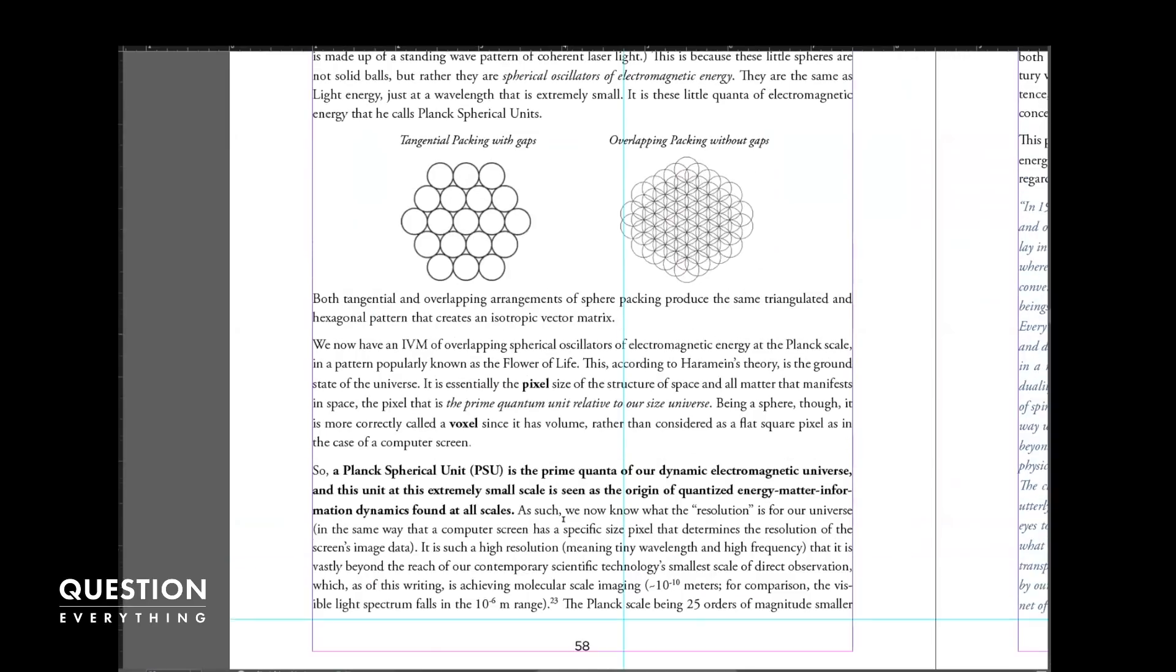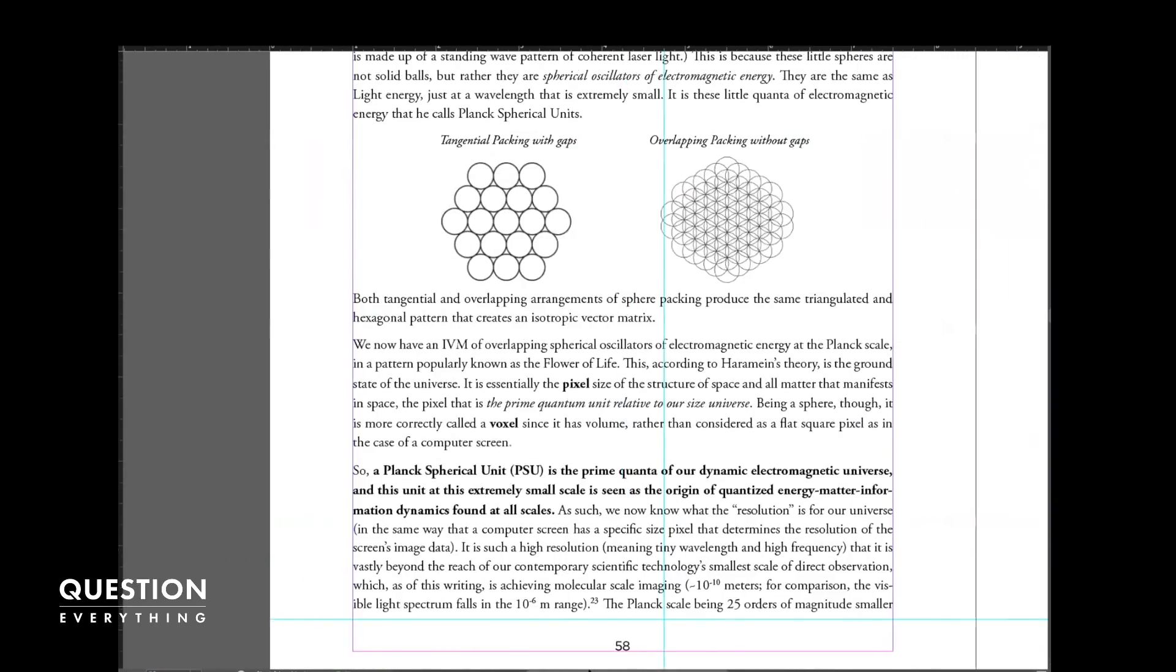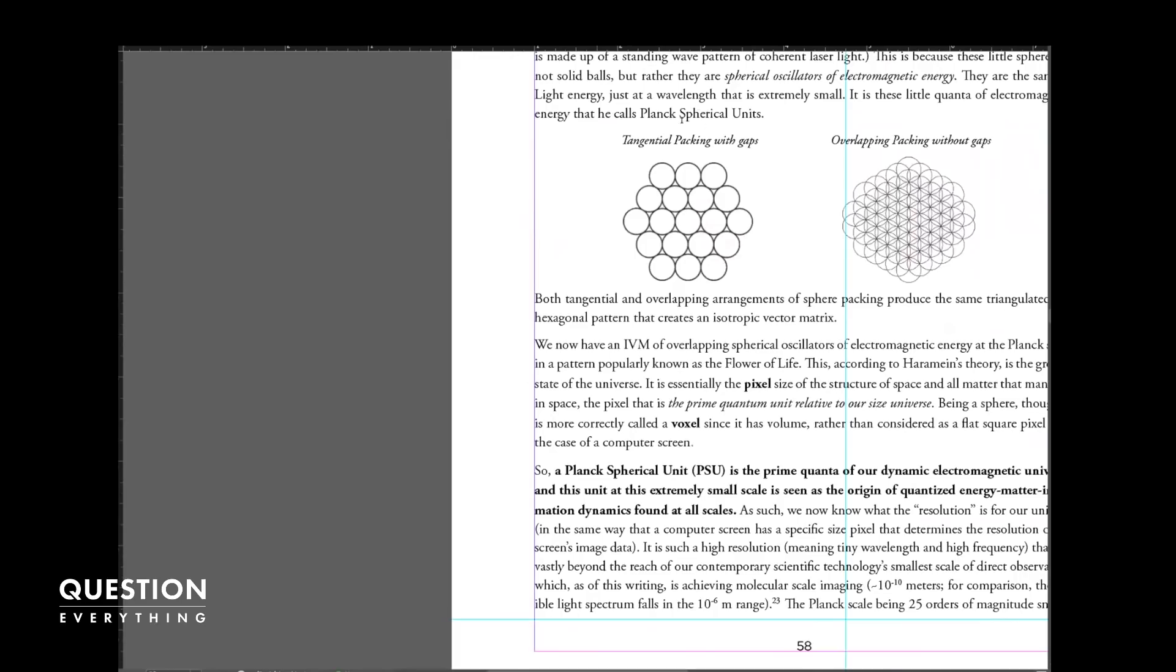You have the relationship between the tangential packing that Buckminster Fuller worked with. What Nassim has done is take that same geometric arrangement, and then he wanted to have an all face, all space filling geometry where there are no gaps between it, like you see in the tangential packing. That would allow a spherical packing to fill all space. That's what he has been using to model what we call the Planck field.